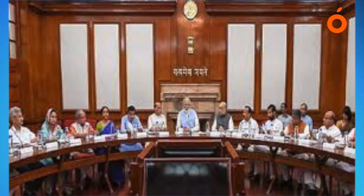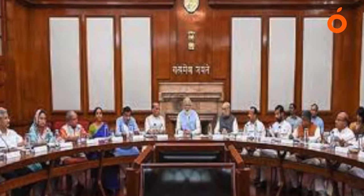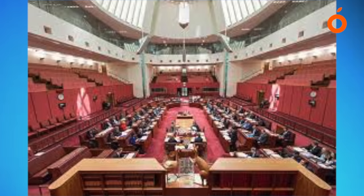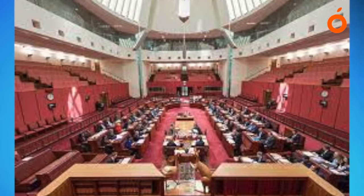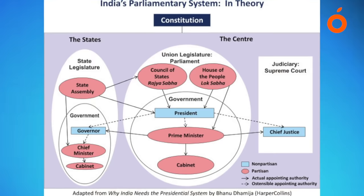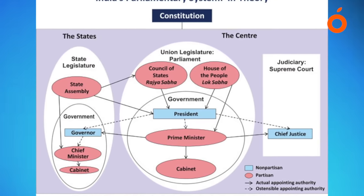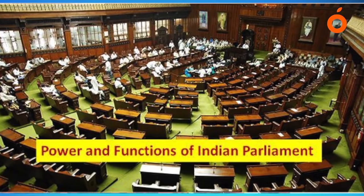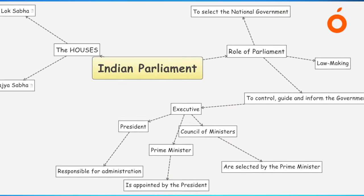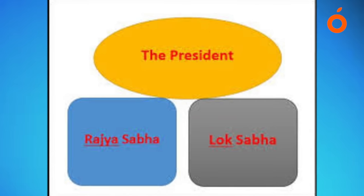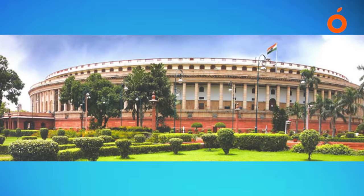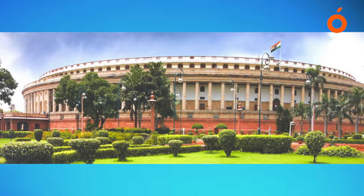The Public Accounts Committee consists of not more than 22 members, 15 of which are drawn from Lok Sabha. They are elected on the basis of the principle of proportional representation by means of single transferable vote. Seven members nominated by Rajya Sabha are co-opted in the committee. No minister may be elected to the committee, and if a member subsequently becomes a minister, he will cease to be a member from the date of his appointment. The term of members is not more than one year.